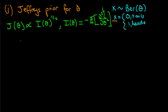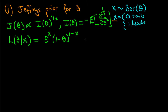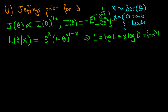First, let's write an expression for the likelihood. The likelihood L(theta | x) for a Bernoulli random variable is theta to the power x times one minus theta to the power one minus x. So the log likelihood, which I'll write as little l, is x times log(theta) plus one minus x times log(one minus theta).